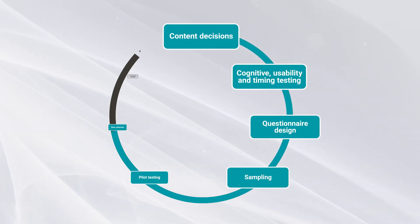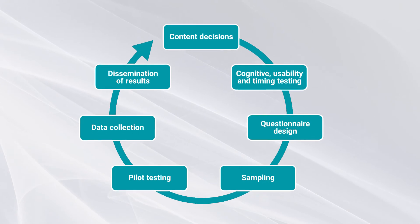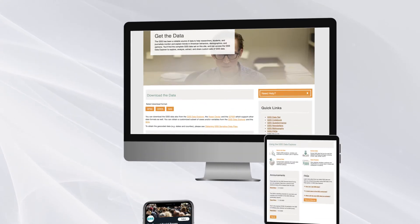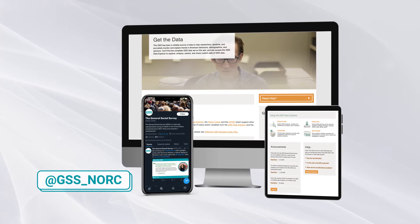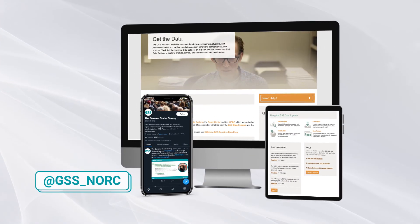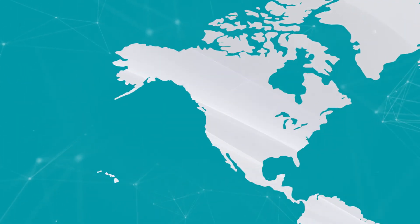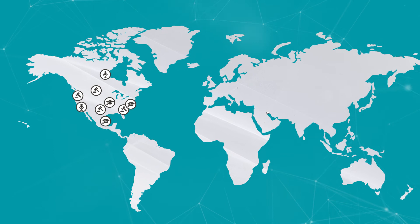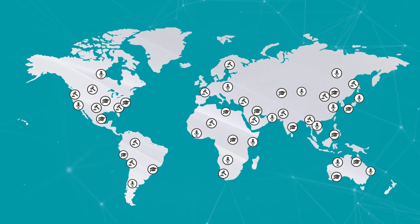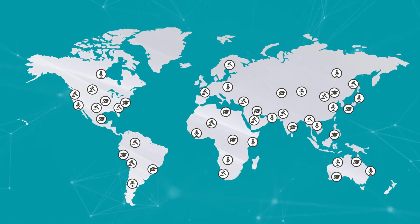And finally, the results are made public via the GSS website, Data Explorer, and social media. GSS data is also distributed by major data archives in the U.S. and used by media, academics, and policy-makers worldwide.